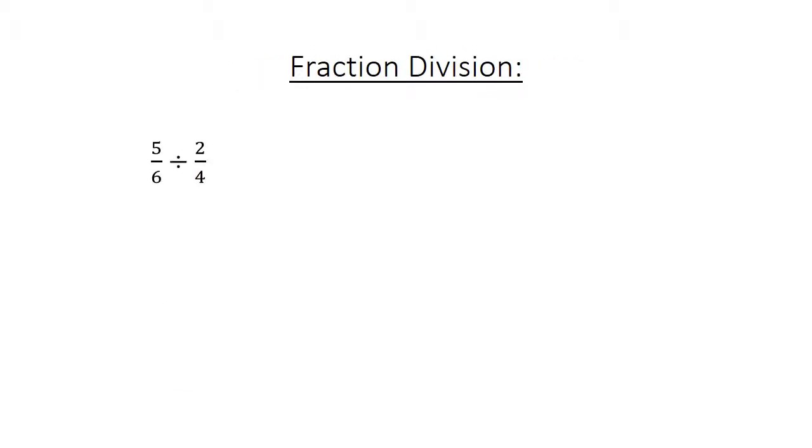Fraction division: 5 over 6 divided by 2 over 4 equals 5 over 6 times 4 over 2, equals 20 over 12, equals 1 and 2 over 3.